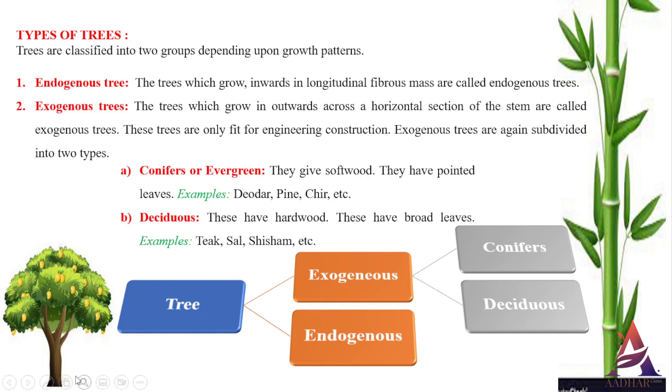Trees are classified into two groups depending on growth patterns. Number one is endogenous trees. Number two is exogenous trees.